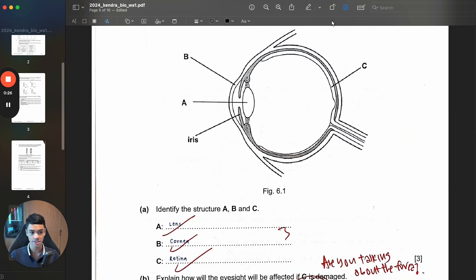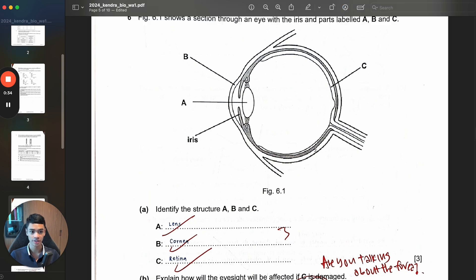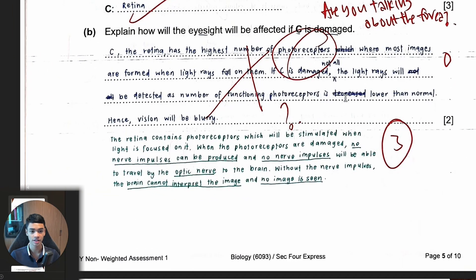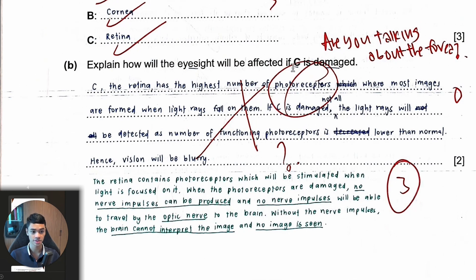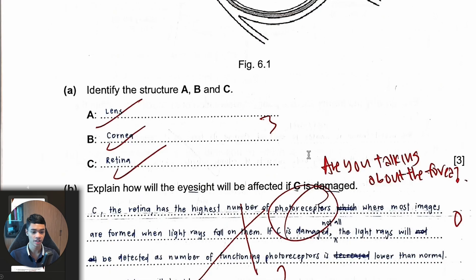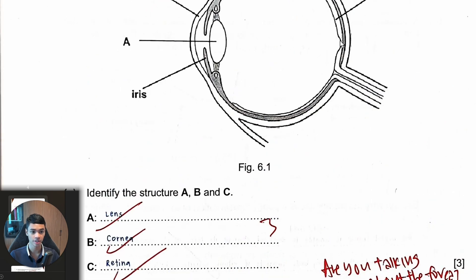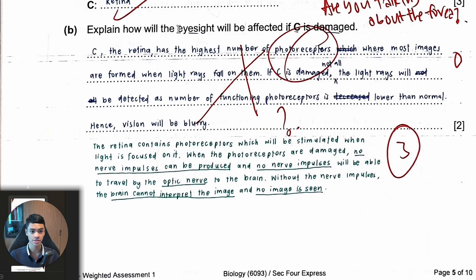Okay, then this one, C is retina, correct, because it's referring to the whole layer here. So it's referring to the whole layer. This is a content error issue because you said the retina has the highest number of photoreceptors where most images are formed when light rays fall on them. That's actually this area here, this sunken pit, because it's directly at the back of the eye. That's where the most light goes, and you are describing the fovea, which is this sunken part.